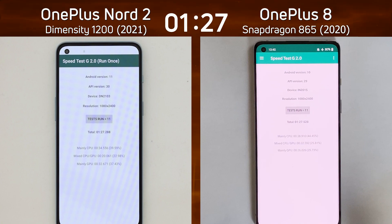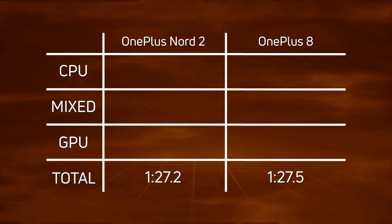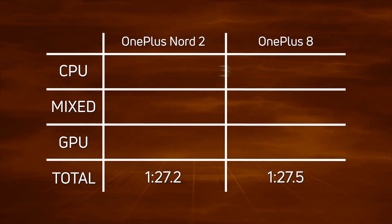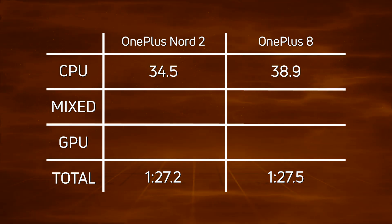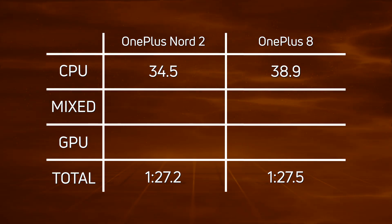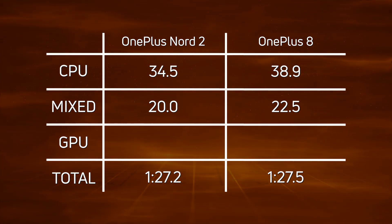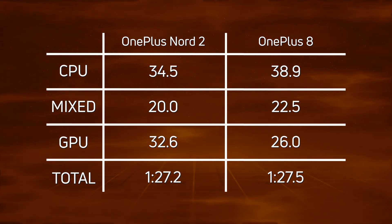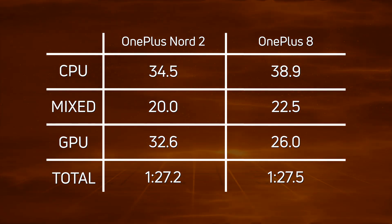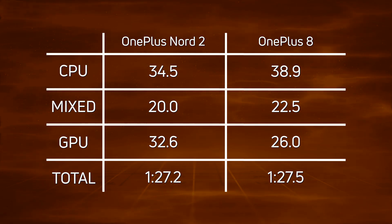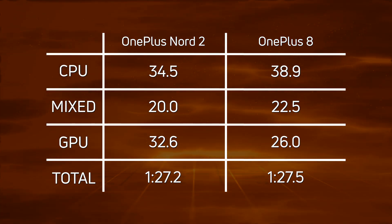Let's break down the scores and see exactly what happened. It was so close: 1 minute 27.2 for the OnePlus Nord 2, 1 minute 27.5 for the OnePlus 8, but that isn't the whole story. On the CPU section, 34.5 seconds versus 38.9 — a difference of 4.4 seconds in favor of the OnePlus Nord 2, as expected given its one-generational lead in CPU architecture. In the mixed CPU-GPU section, still a win for the Nord 2: 20 seconds versus 22.5 seconds. But in the GPU section everything turns around — Mali versus Adreno: 32.6 seconds for the OnePlus Nord versus just 26 seconds for the OnePlus 8, a difference of 6.6 seconds. That GPU advantage wasn't quite enough to overcome the CPU and mixed-test gap, so by just 0.3 of a second, the OnePlus Nord 2 wins with 1 minute 27.2.